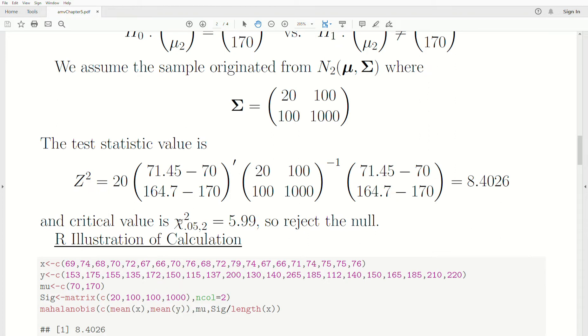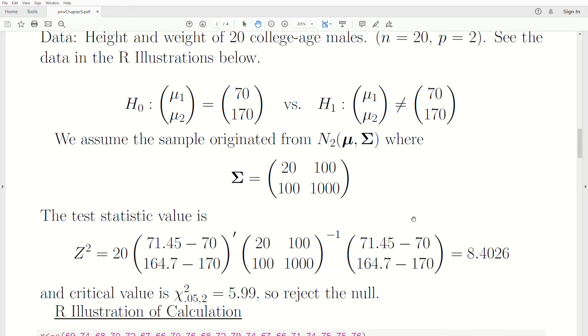Well, the critical value, χ²₀.₀₅ with two degrees of freedom is 5.99. So our test statistic is bigger than this critical value. And so we reject. So there is evidence to say that the mean, that our data follows some normal distribution with mean vector not equal to 70 and 170.